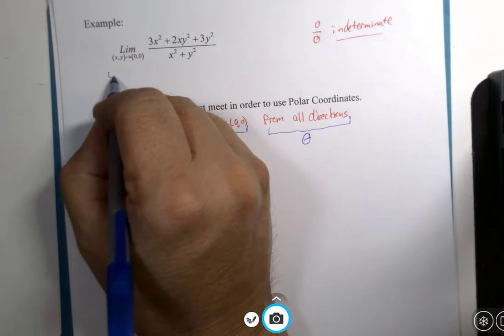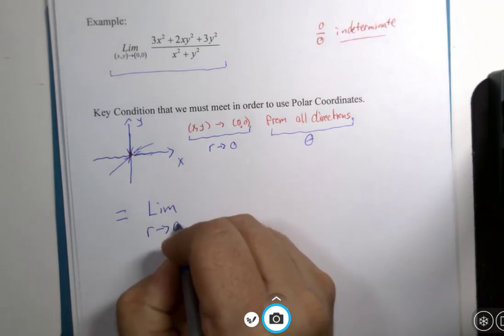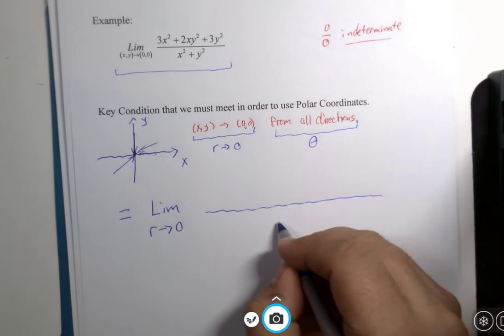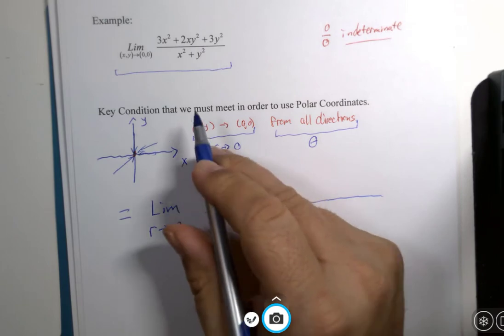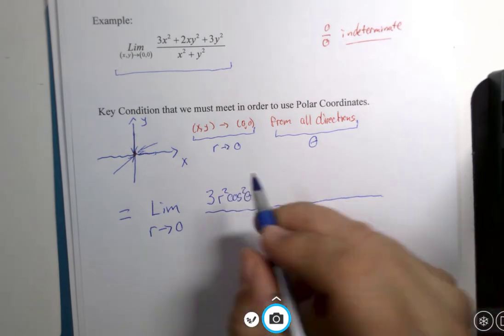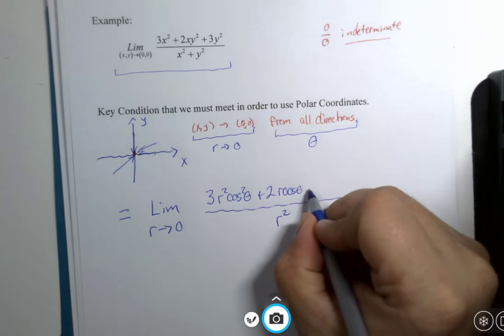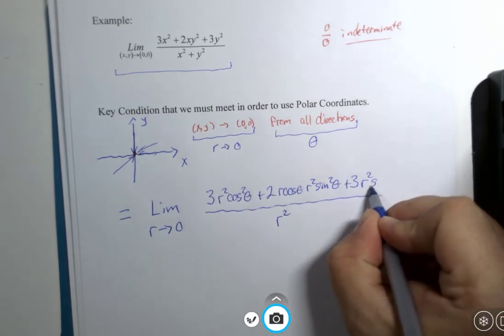So, if we take this problem here and convert it to this new concept, the limit r approaches zero. The denominator, x squared plus y squared, is equal to r squared. There is a similar set of terms we could simplify in the numerator, but I'm going to hold off briefly on that. And I'm going to do a direct substitution. 3x squared would be 3r squared cosine squared of theta. 2xy squared is 2r cosine of theta, r squared sine squared of theta. And then 3y squared is 3r squared sine squared of theta.